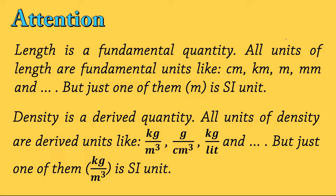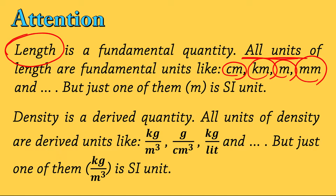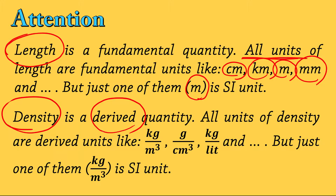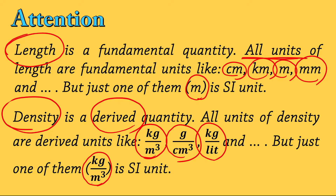Pay attention: length is a fundamental quantity, defined independent of all other quantities. All units of length — centimeter, kilometer, meter, millimeter — are fundamental units, but only one of them is the SI unit. So SI unit and fundamental unit are different concepts. Similarly, density is a derived quantity, so any unit for it — kilogram per cubic meter, gram per cubic centimeter — is a derived unit, but only kilogram per cubic meter is the SI unit, because kilogram and cubic meter are both SI units.